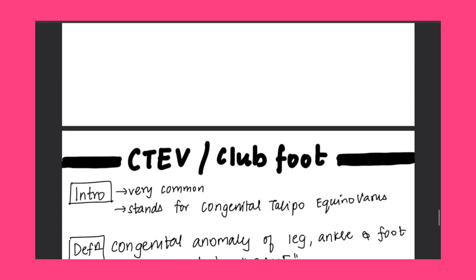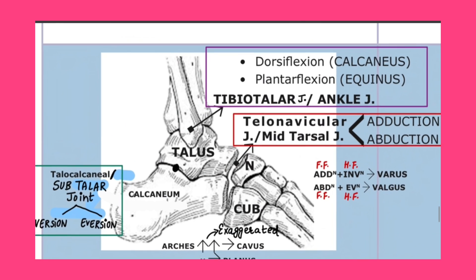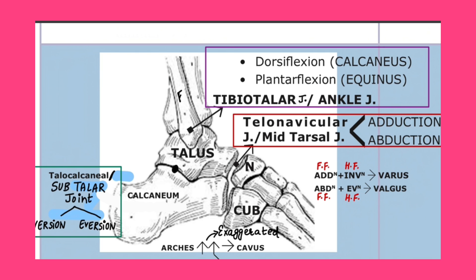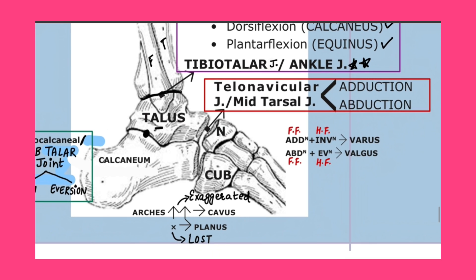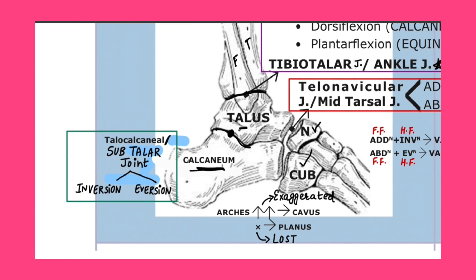Before that, let's review the anatomy. This is the fibula, this is tibia, this is talus, and this joint is known as the tibiotalar joint, also known as the ankle joint. The movements that occur here are plantar flexion and dorsiflexion. Then this is the calcaneum, this is navicular, this is cuboid. This joint is the talocalcaneal joint, also known as the subtalar joint — below talus.